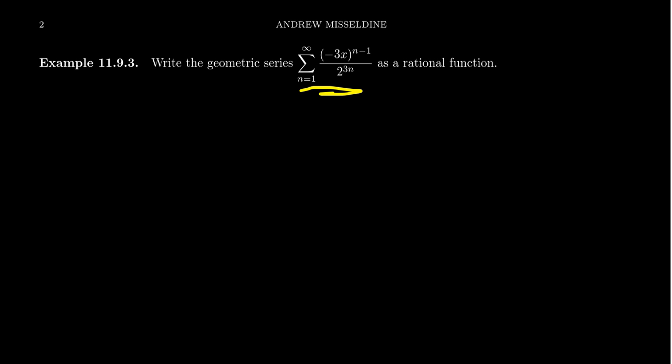So we could say that the function is represented by the power series on the interval of convergence. And so modifying this geometric series example, we get something like the following. Consider the following geometric series: sum from n equals 1 to infinity of negative 3x to the n minus 1 over 2 to the 3n. And we want to find a rational function which agrees with this geometric series on its interval of convergence.